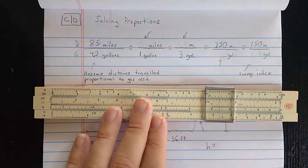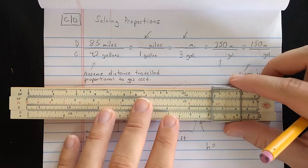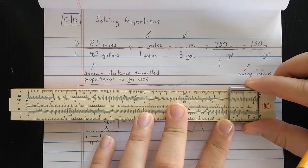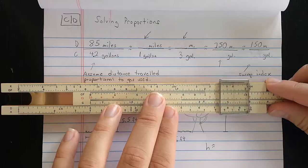Let's say I take a car trip and I travel 8.5 miles, and my car uses 4.2 gallons. We'll assume the amount of gas my car uses is proportional to the distance traveled. So I'm going to set on the D scale the number of miles traveled, 8.5, then I'm going to align that with the number of gallons used, the 4.2.